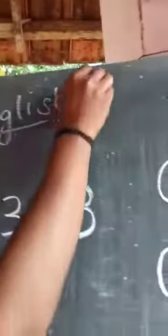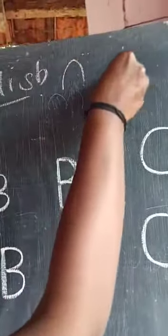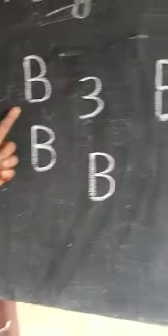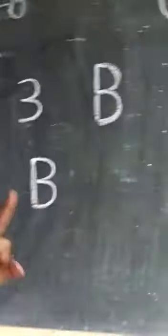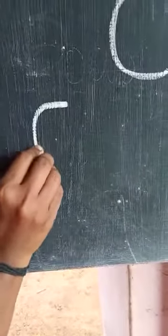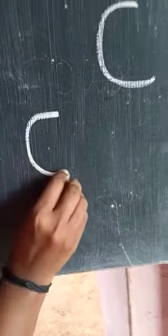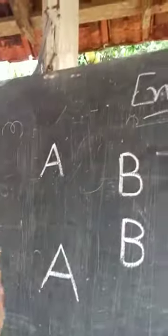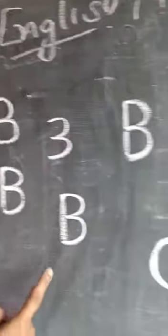We will add a new word. That's why we have to add a new word. Let's add a new word. A, B, C. You can count C. A, B, C.